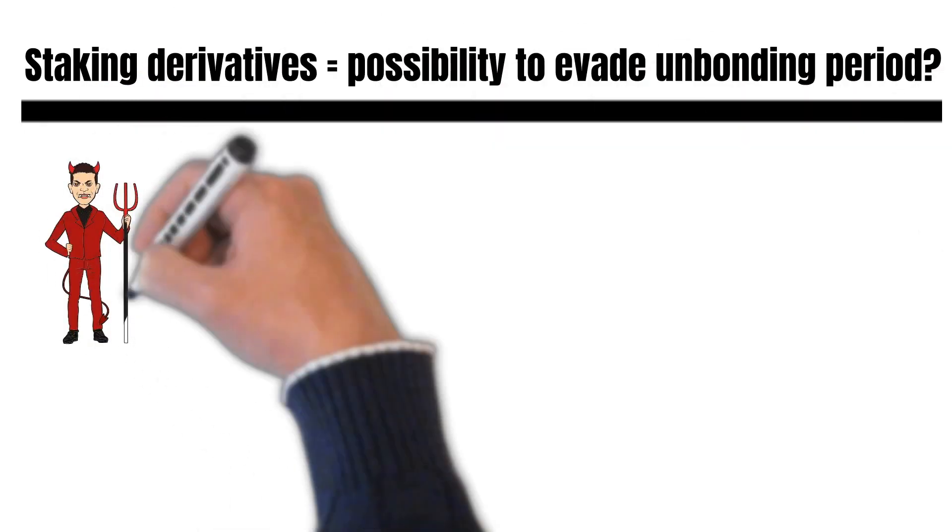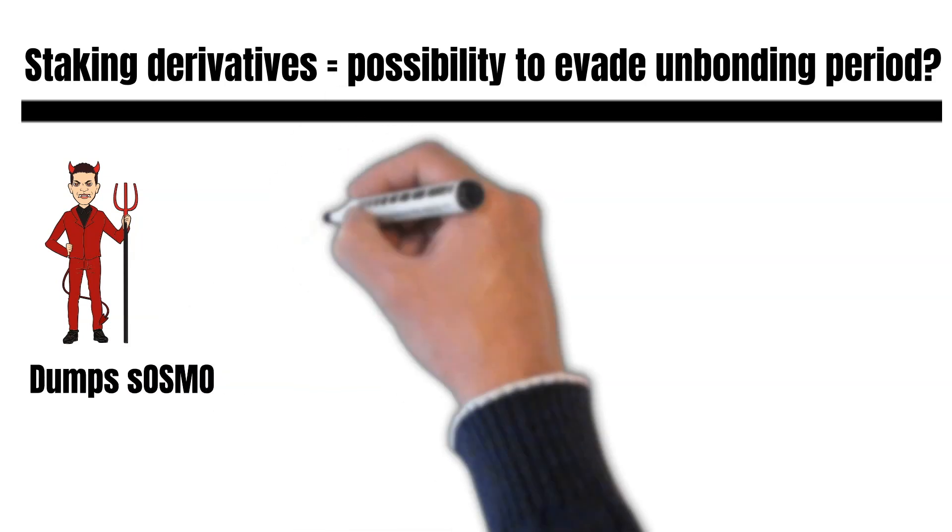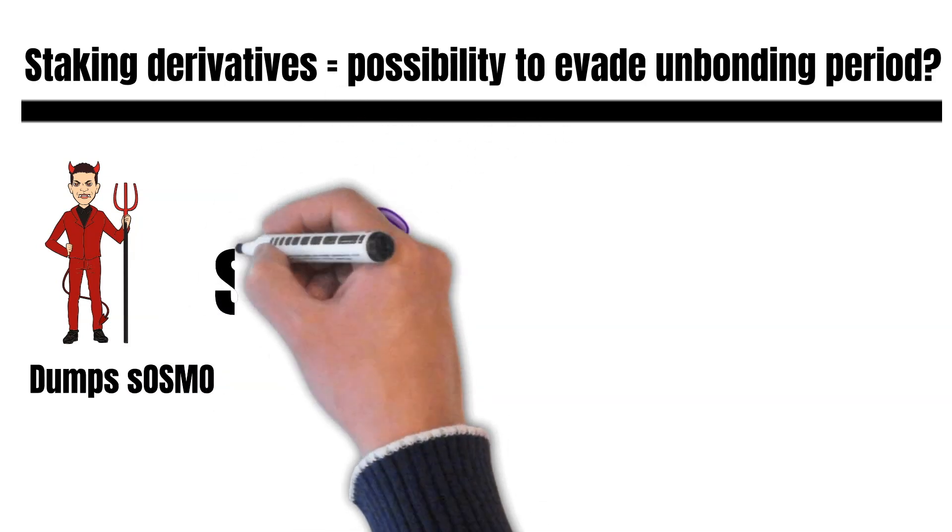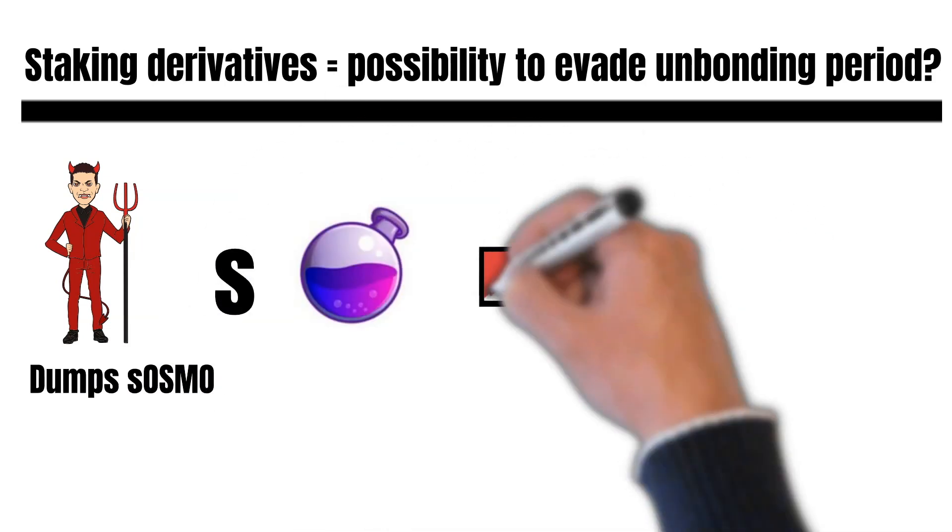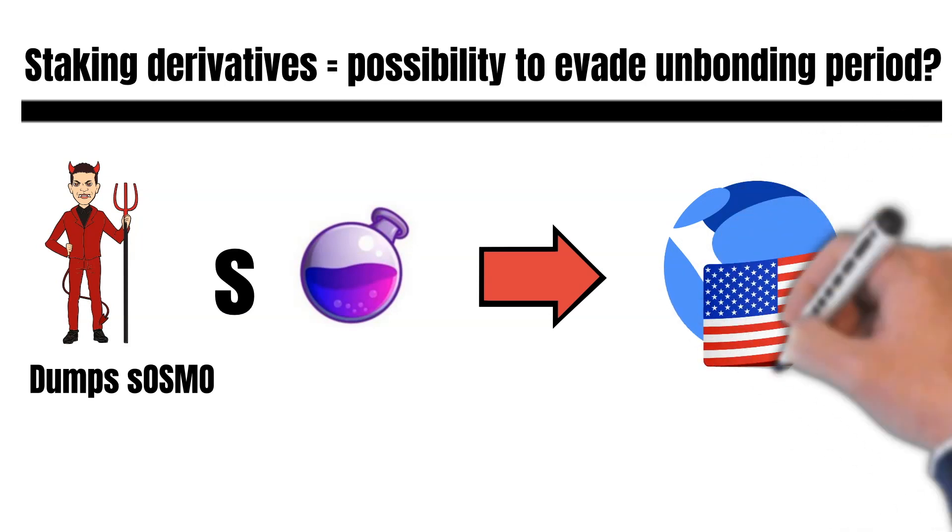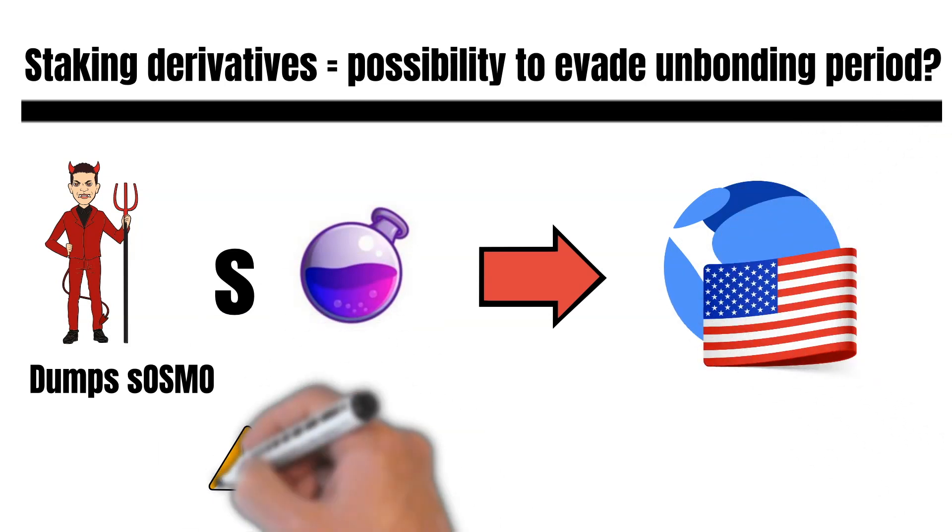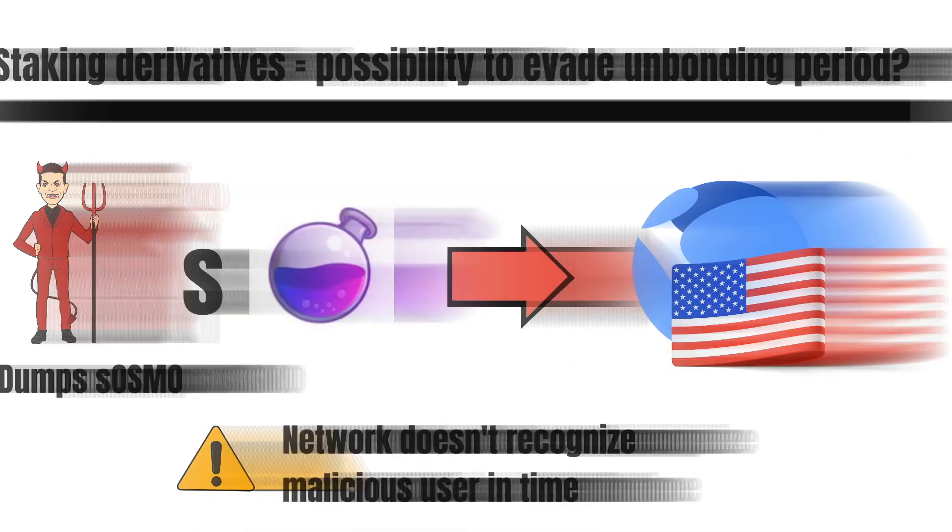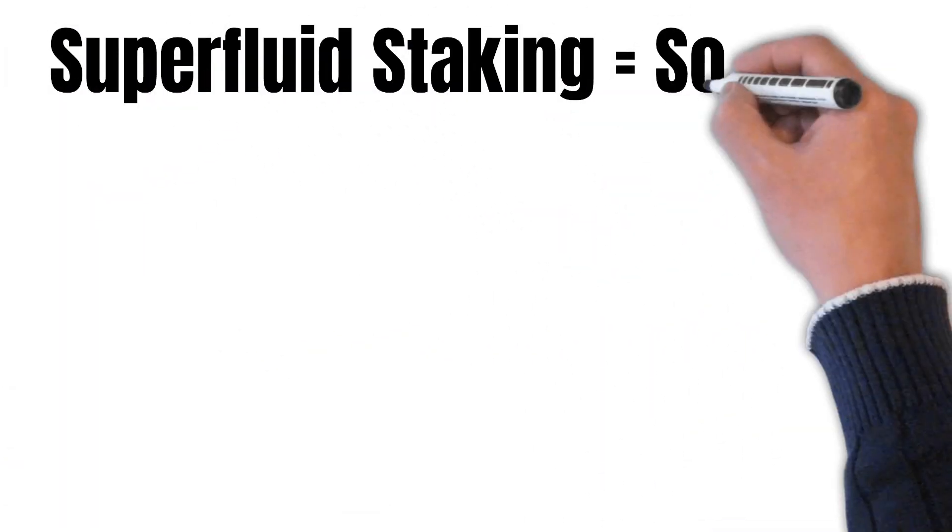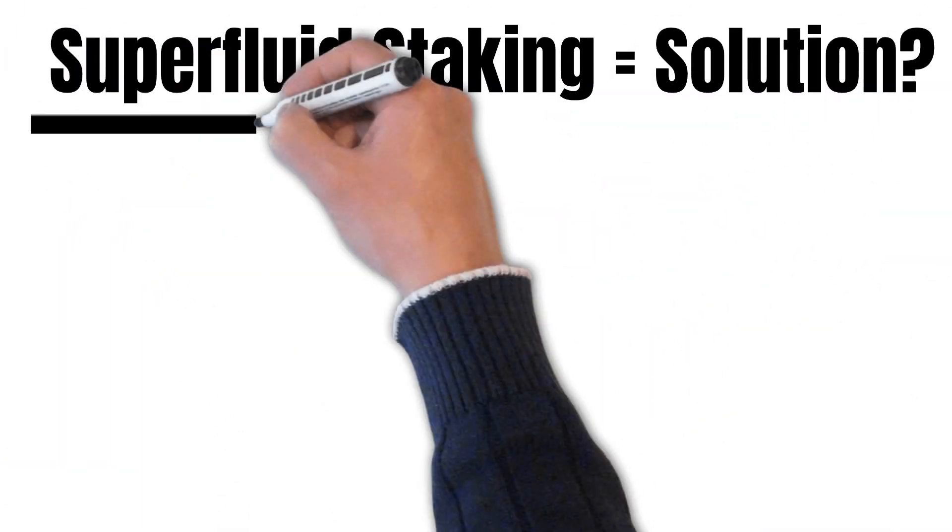As already mentioned, the staking derivative has an economic value. So, the malicious user could dump the staking derivative against, for example, UST, before the network recognizes that the user acts maliciously. Because of this, we need a solution. The solution is called superfluid staking.